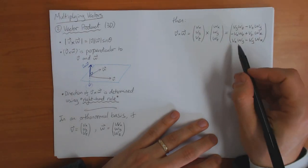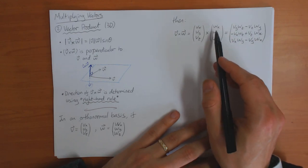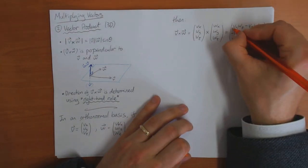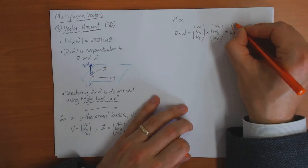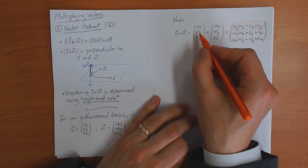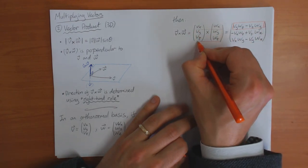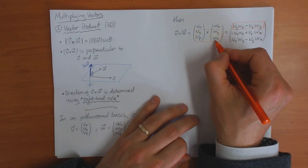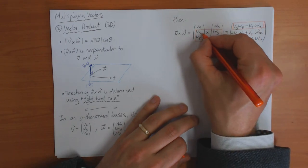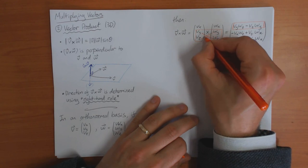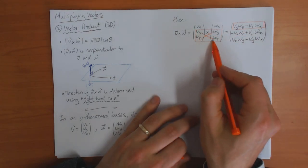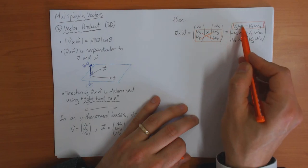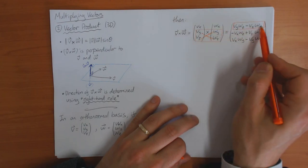To find the x component, you look at the other values — the y and z components of v and w — and you make a cross: this one times this one, then this one times this one. This way is plus and this way is minus. So that gives you vy·wz minus vz·wy.